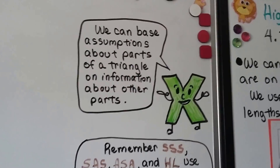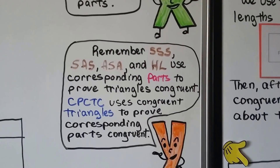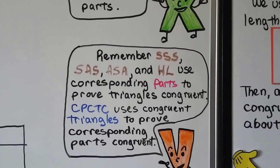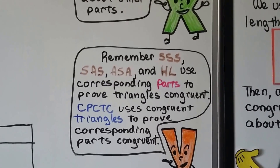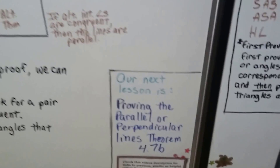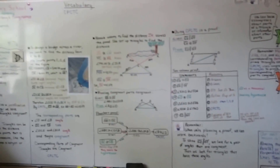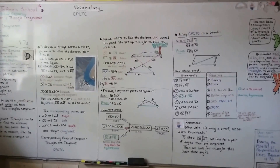We can base assumptions about parts of a triangle on information about other parts. SSS, SAS, ASA, AAS, and hypotenuse-leg use corresponding parts to prove triangles congruent. CPCTC uses congruent triangles to prove the corresponding parts — it's flipped around. Our next lesson is proving parallel or perpendicular lines, theorem 4.7b. Hope this was helpful, and I'll see you next time — hit the like button if you can.